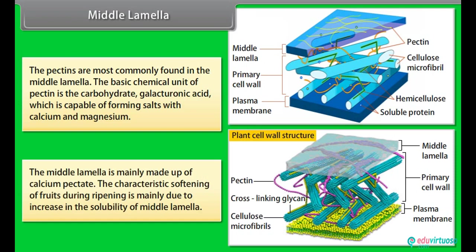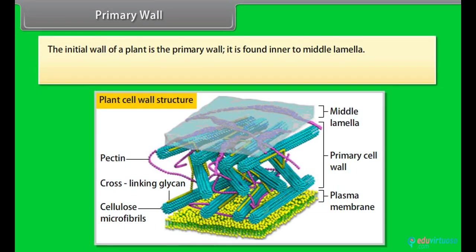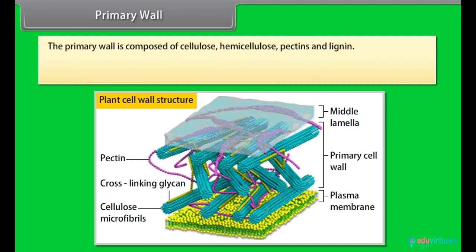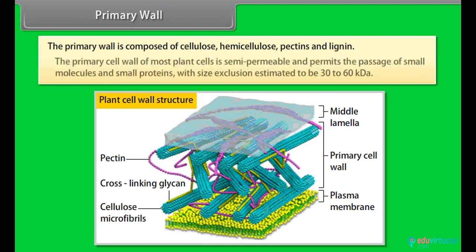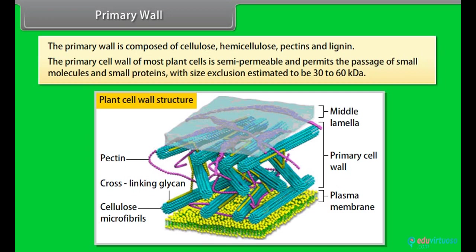Primary wall: The initial wall of a plant is the primary wall. It is found inner to middle lamella. The primary wall develops on middle lamella on both the sides. The primary wall is composed of cellulose, hemicellulose, pectins and lignin. The primary cell wall of most plant cells is semi-permeable and permits the passage of small molecules and small proteins with size exclusion estimated to be 30 to 60 KDA or 30,000 to 60,000 atomic mass.